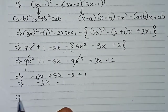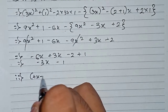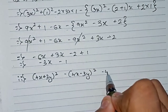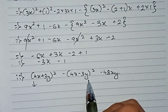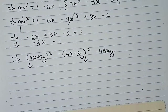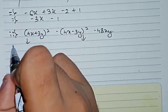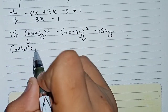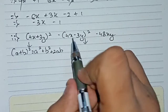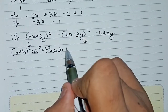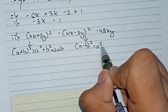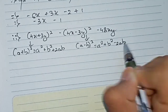Now I move on to our next question, which says: (4x+3y)² minus (4x-3y)² minus 48xy. For the first portion we will use one identity and for the second portion another identity; the minus 48xy is a loose term and needs no identity. The first identity will be (a+b)² = a² + b² + 2ab, and the second will be (a-b)² = a² + b² - 2ab.